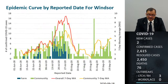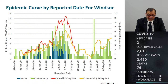This graph represents the epidemic curve by reported date for the City of Windsor, where most cases have occurred. We can see the community 7-day moving average shows a slight uptick in recent weeks — something to be mindful of. Some of those cases are linked with community clusters that we have reported, and we are hoping these numbers will go down to a relatively stable level in the next couple of weeks.